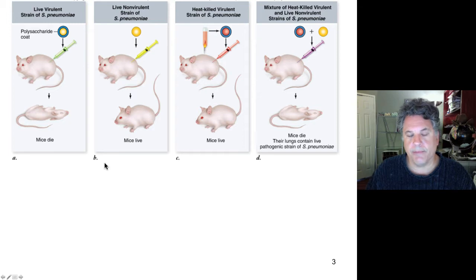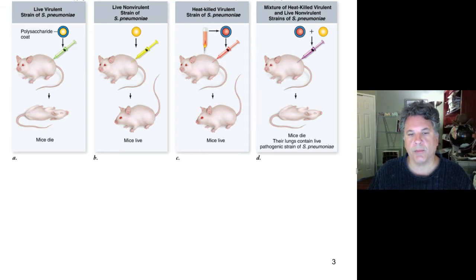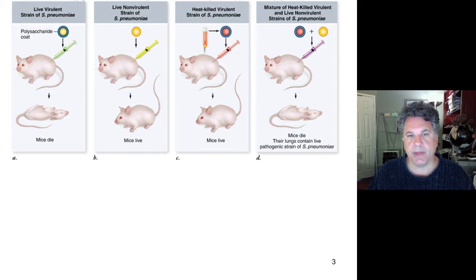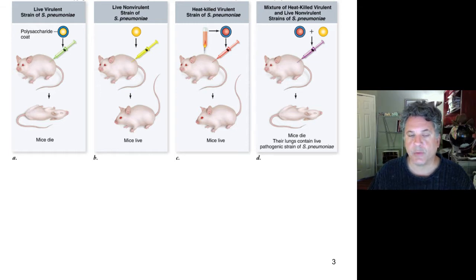For a long time it was thought that DNA was too simple a molecule to be the carrier of genetic information — that there must be more complex molecules. DNA was known to be fairly simple in that it contained only four different types of monomers, each containing a different nitrogenous base: adenine, thymine, guanine, or cytosine. Proteins, having 20 different amino acids, were thought to be much more likely carriers of genetic information.